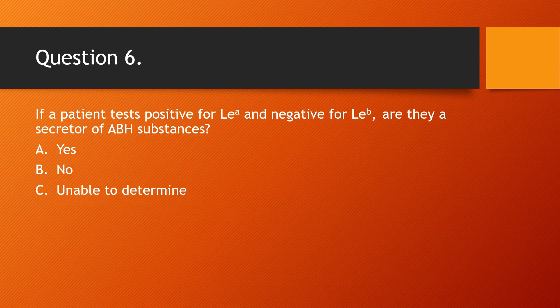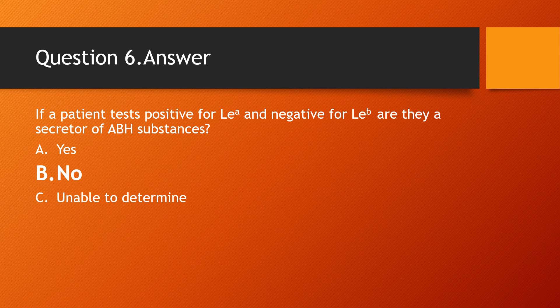Question 6: If a patient tests positive for Lewis A and negative for Lewis B, are they a secretor of ABH substances? Choices: A) yes, B) no, C) unable to determine. The answer is B, no. This person is not a secretor of ABH substances.